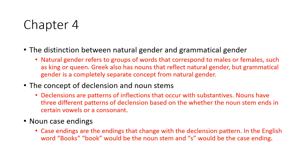The distinction between natural gender, neutral gender, and grammatical gender: natural gender refers to groups of words that correspond to males or females, such as king or queen. Greek also has nouns that reflect natural gender — for example, 'anair' is a noun that reflects natural gender and means 'man' — but grammatical gender is a completely separate concept from natural gender.